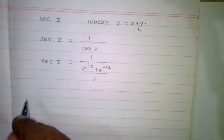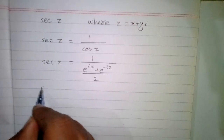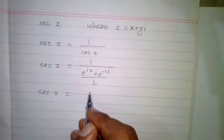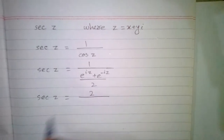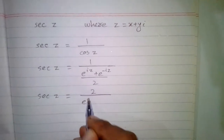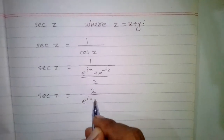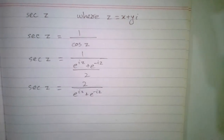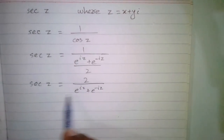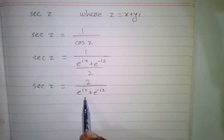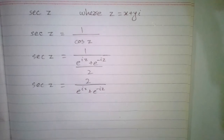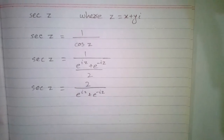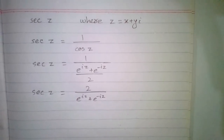This fraction can be written as 2 upon e to the power iota z plus e to the power minus iota z. So secant of z is equal to 2 upon e to the power iota z plus e to the power minus iota z. This is the secant of a complex number.